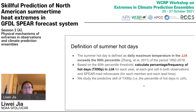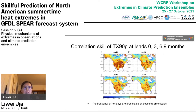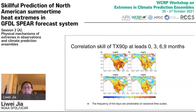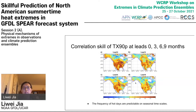We study the skill of heat extremes by looking at the correlation skill of TX90P at different lead times, from lead 0 months to lead 9 months. We can see the skill pattern from lead 0 to lead 9, which shows skillful prediction over Western United States, Central United States, and Canada, with similarities among different lead times. From this, we can see the frequency of hot days is predictable on seasonal time scales.